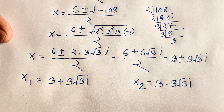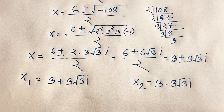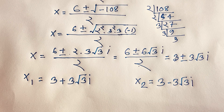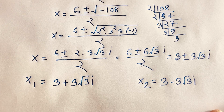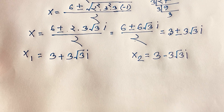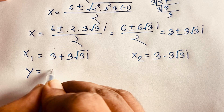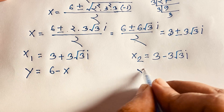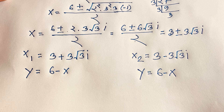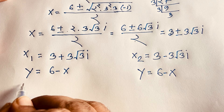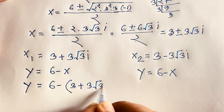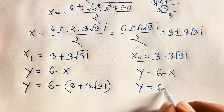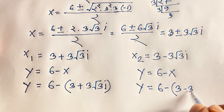I solved this German mathematical question — it is a nice algebra question. Now we know our third equation is y equals 6 minus x, so we find the value of y. When x1 equals 3 plus 3 root 3 i, then y1 equals 6 minus (3 plus 3 root 3 i), which gives y1 equal to 3 minus 3 root 3 i.